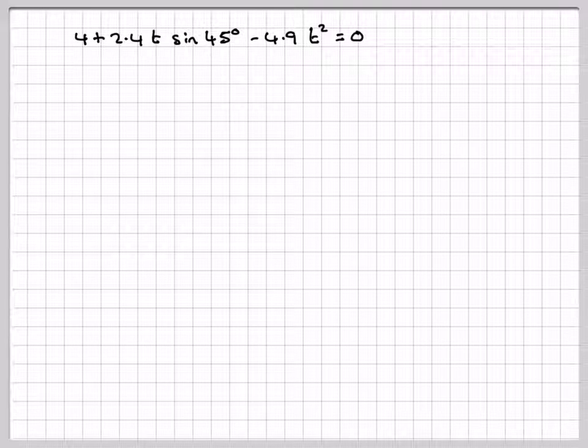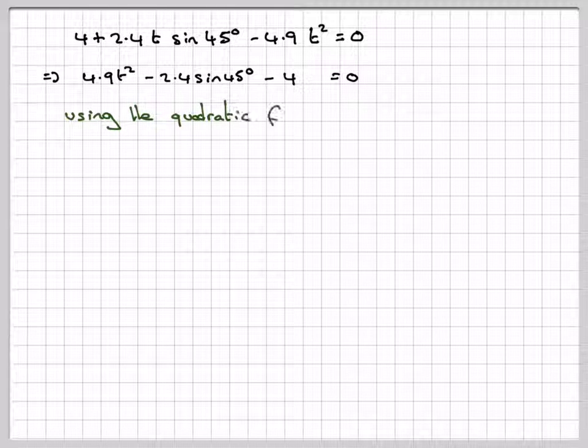This is a quadratic in t. So I'm just going to rewrite it so the 4.9 is positive. That means you change the sign of that one, that one, and that one. So positive, negative, negative. To solve this, you need to use the quadratic formula.